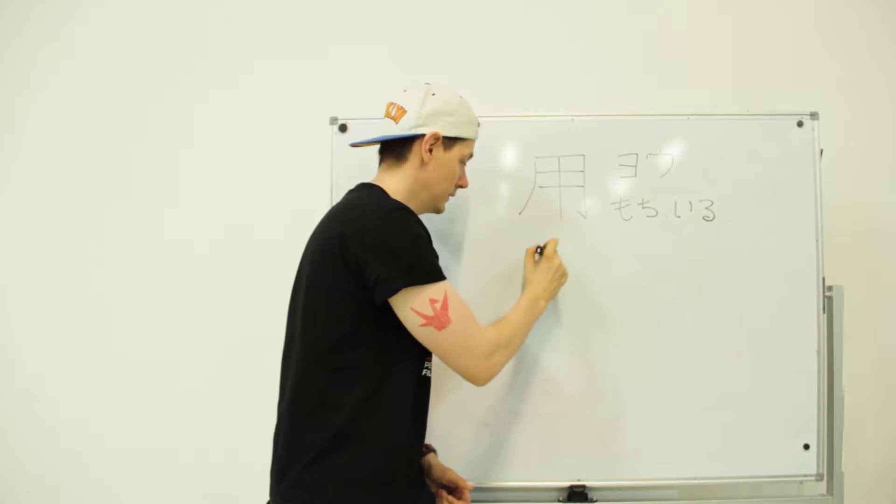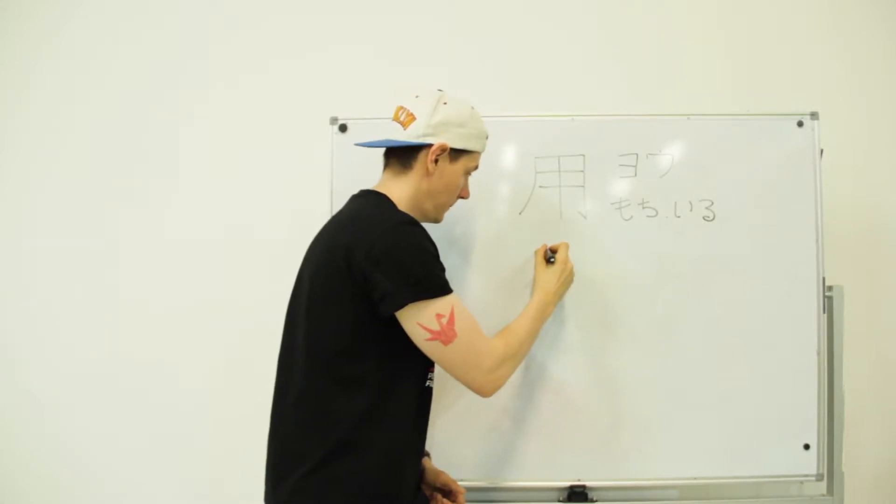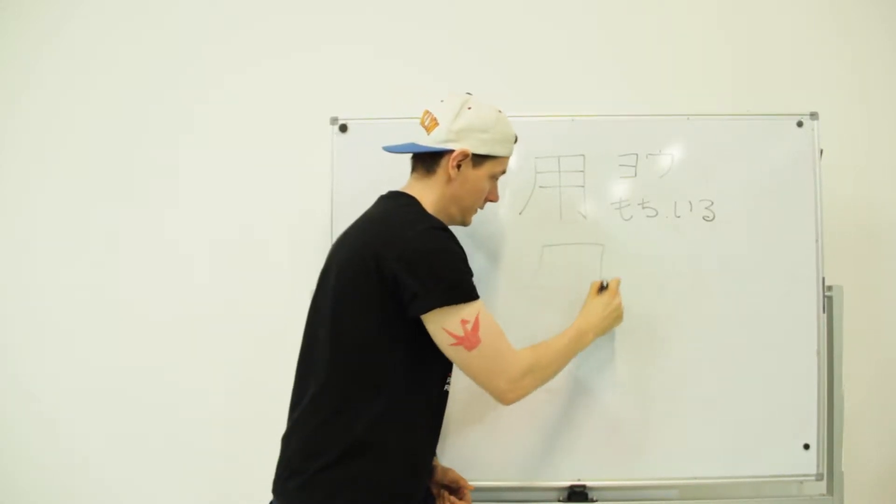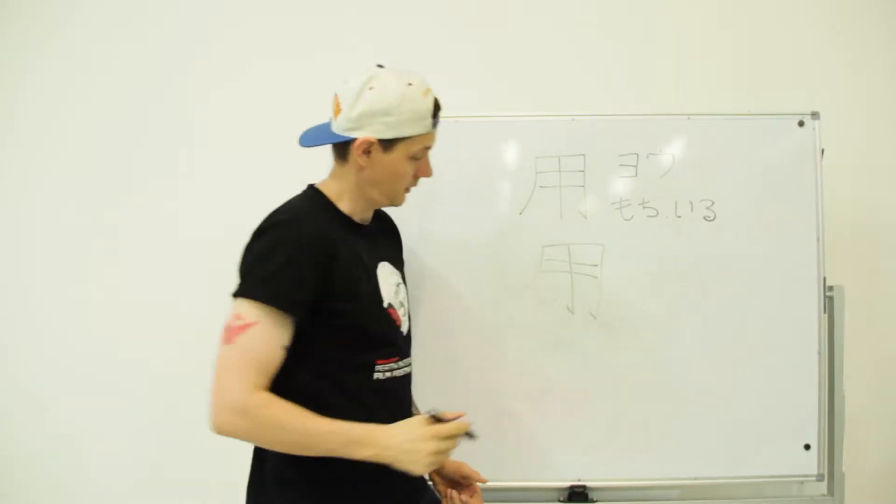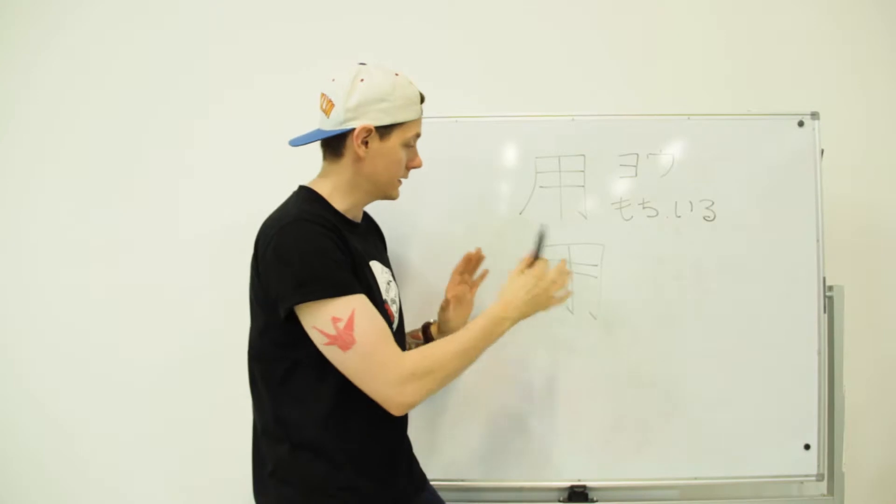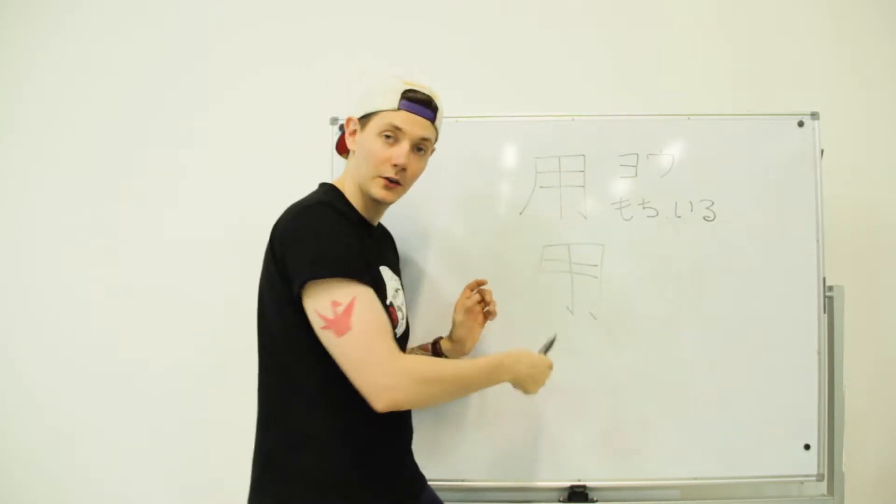When you draw it, you just draw... sorry. The pen's almost dying here. 1, 2, 3, 4, and then a line through the middle. Hope you can see that. It's essentially just a moon, and you draw a line through the middle.